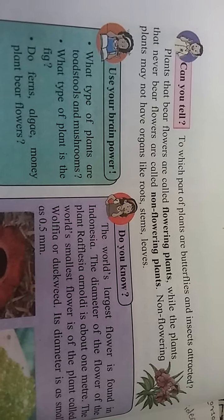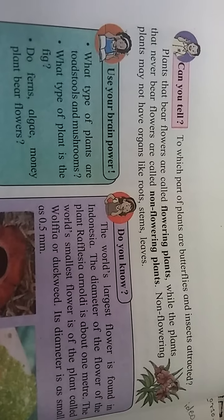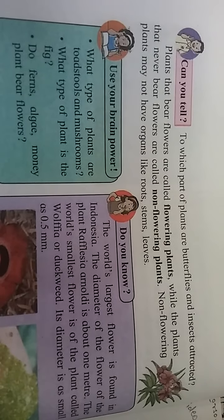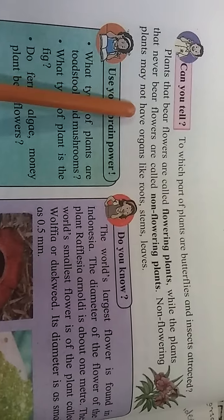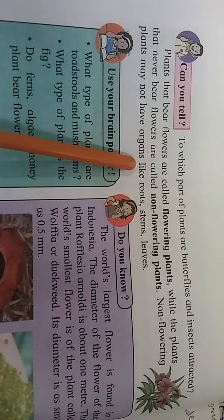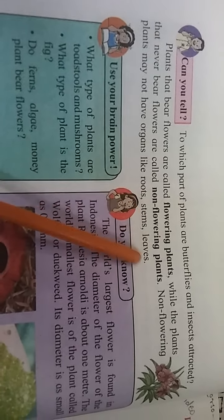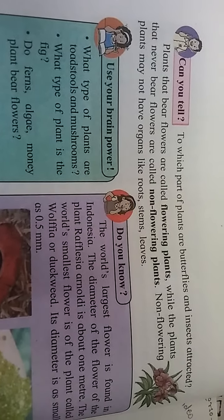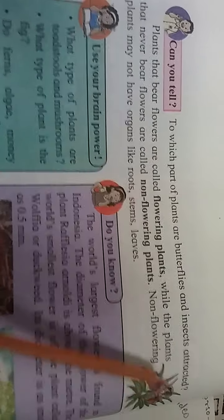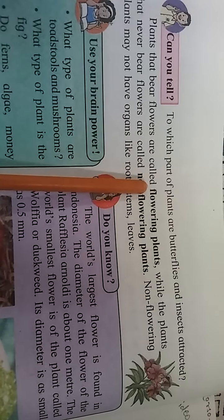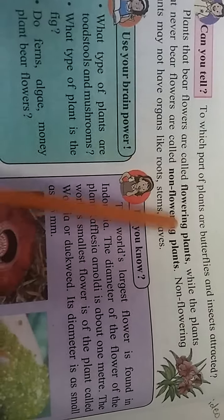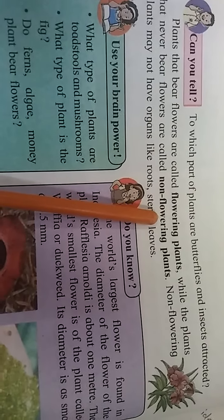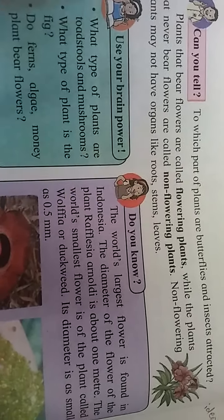Non-flowering plants may not have organs like roots, stem, and leaves. Flowering plants are those which give flowers, and non-flowering plants are those which do not give flowers.